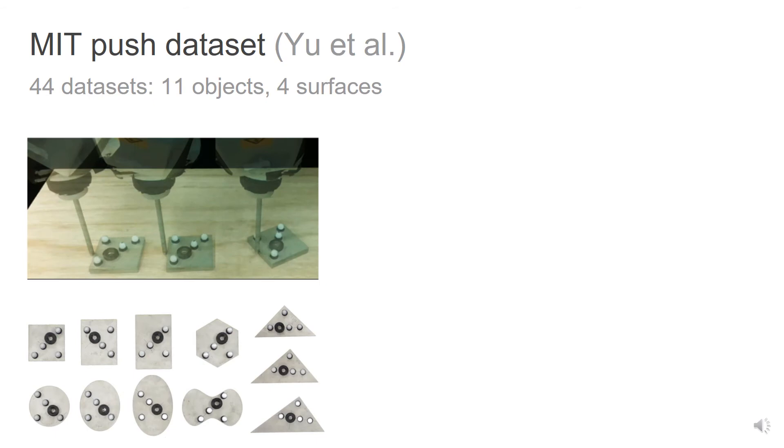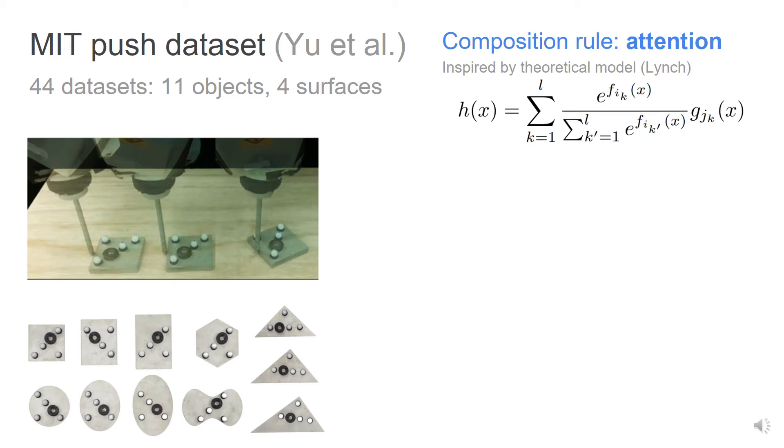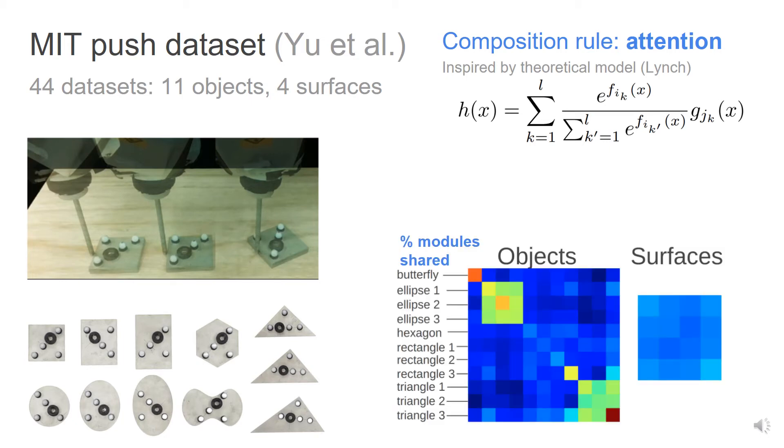We test it in two robotic domains. First, we apply it to the MIT push dataset, with data of a robot pushing 11 different objects on 4 different surfaces. We use attention as our composition rule. The modules depend very strongly on the object type, but not on the surface, as expected. Moreover, it discovers latent structure within the objects.